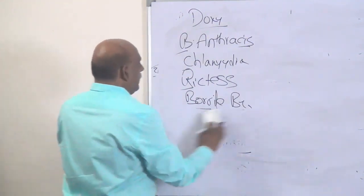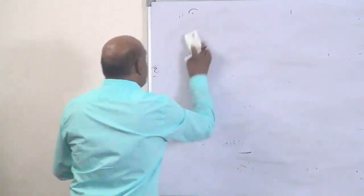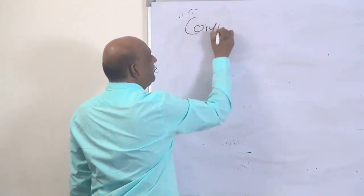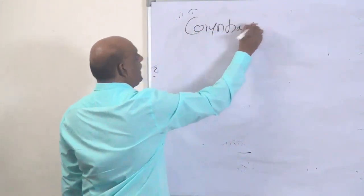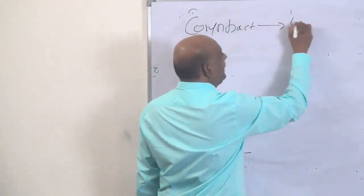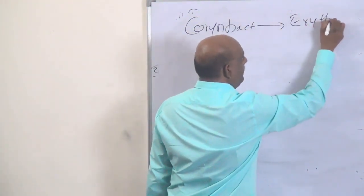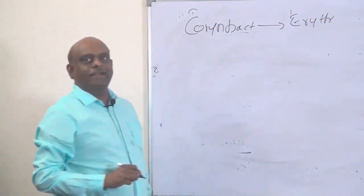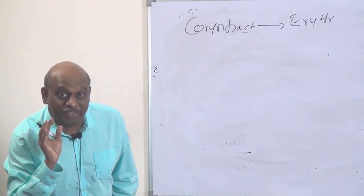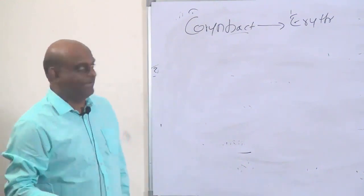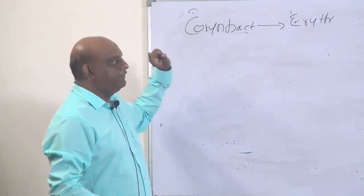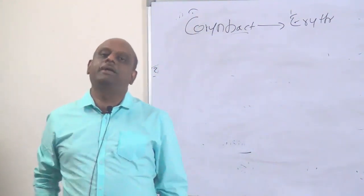Corynebacterium — what is the drug of choice? Another favorite question. Don't forget: erythromycin. Corynebacterium causes diphtheria. In diphtheria, the mouth becomes red — 'erythro' means red, so erythromycin. Do not forget corynebacterium.